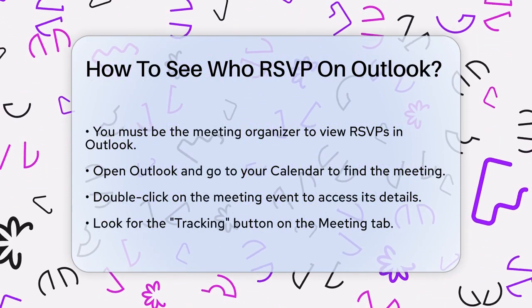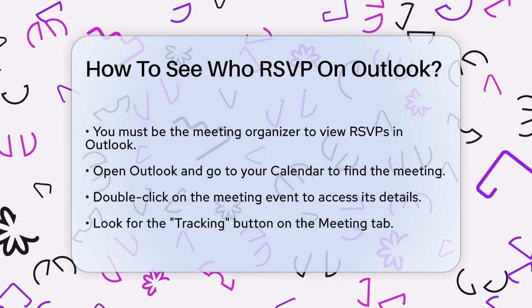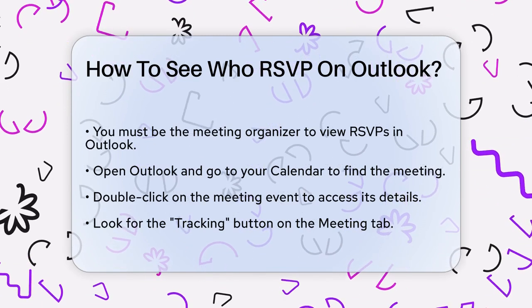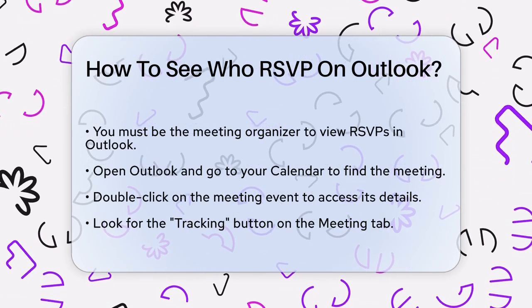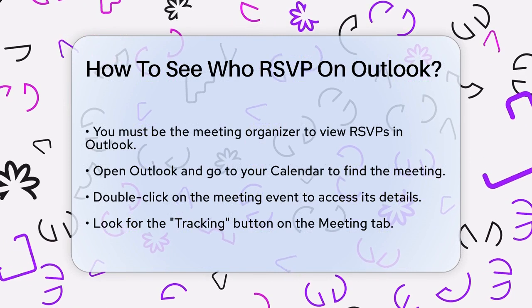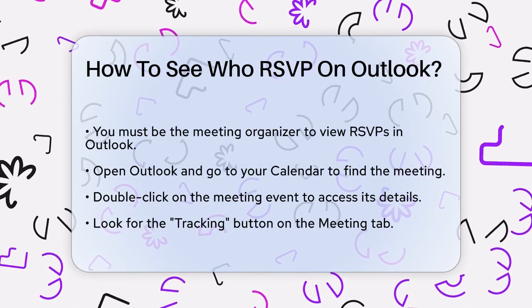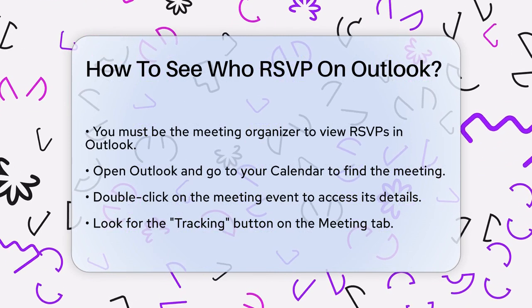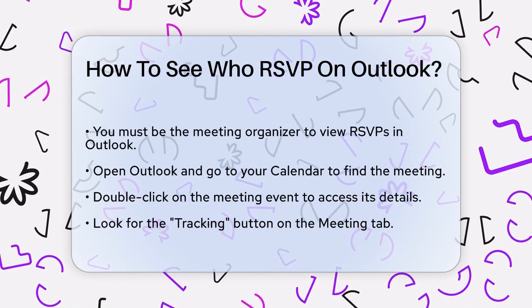First, you need to be the meeting organizer to see the RSVPs. Open Outlook and navigate to your calendar. Find the meeting you created and open it by double-clicking on the event.